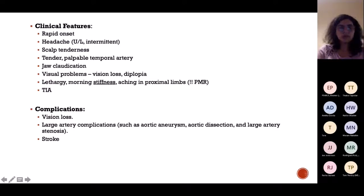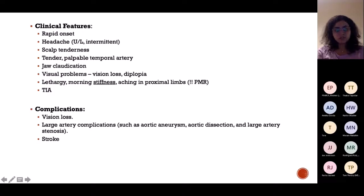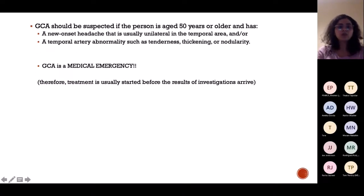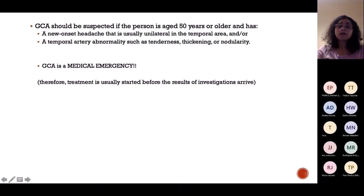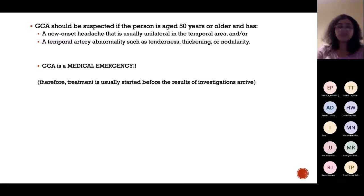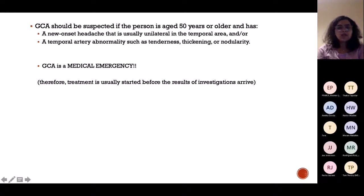Complications include stroke, vision loss, and if large arteries like the carotid are involved, aneurysms and dissections. GCA should be suspected if a person is more than 50 years old with a new sudden-onset unilateral temporal headache and temporal artery abnormality — your first differential should always be GCA. In developed nations, autoimmune diseases are more common, so a new onset one-sided headache: start thinking about GCA.